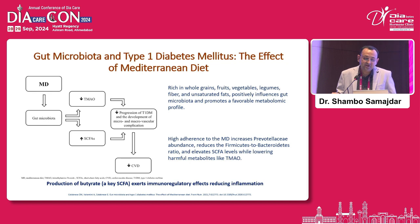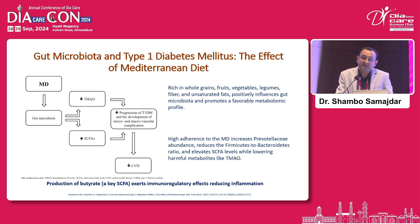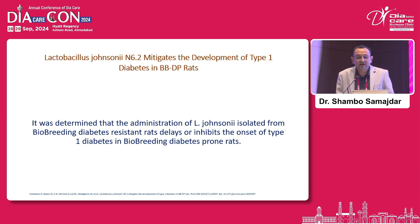Another study showed that introducing a Mediterranean diet improved gut microbiota quality, increased short-chain fatty acid levels, and decreased trimethylamine N-oxide. This had an ameliorating effect, reducing inflammation and cardiovascular disease events related to Type 1 diabetes. A further study in a Type 1 diabetes rat model showed that the probiotic Lactobacillus johnsonii inhibited or delayed the onset of Type 1 diabetes.